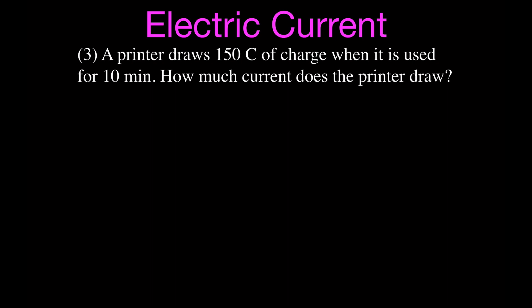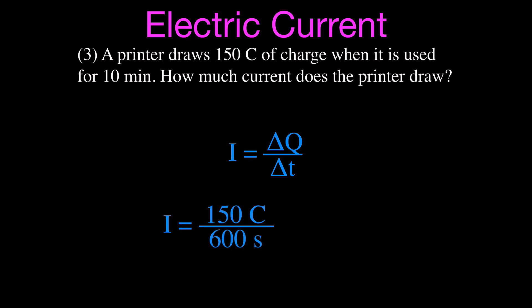Now we're going to do some problems with numbers that aren't quite so round. A printer draws 150 coulombs of charge when used for 10 minutes — how much current is flowing through it? Using the equation I = Q / T, remember to convert minutes to seconds: 10 minutes is 600 seconds. So the current equals 150 divided by 600, which gives 0.25 amperes.